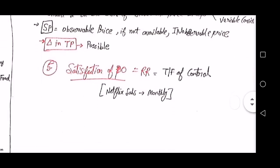Step five is satisfaction of the performance obligation, which is revenue recognition when control is transferred. For example, a Netflix subscription cannot be recognized on an annual basis because the control is transferred to the customer on a monthly basis. Therefore, Netflix subscription revenue should be recognized on a monthly basis.